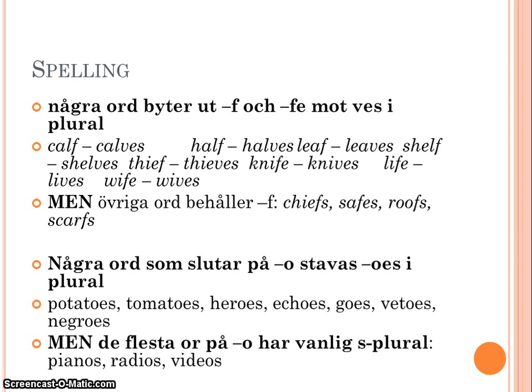A few words about spelling. Some words exchange f and fe into ves in the plural, such as calf/calves, half/halves, leaf/leaves, shelf/shelves, thief/thieves, knife/knives, life/lives, and wife/wives.